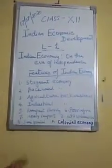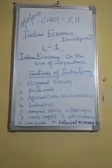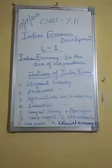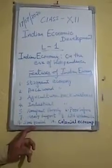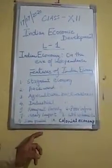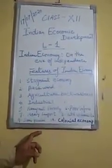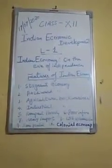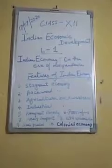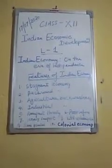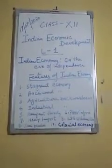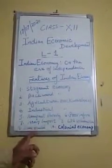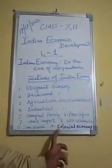The ninth point is semi-feudal economy. On the Eve of Independence, the Indian economy was neither wholly feudal nor wholly capitalist — it showed a mixed, semi-feudal economy. Such an economy had a mixture of feudalistic and capitalistic modes of production. The feudalistic mode of production leads to low production, and low production leads to backwardness.